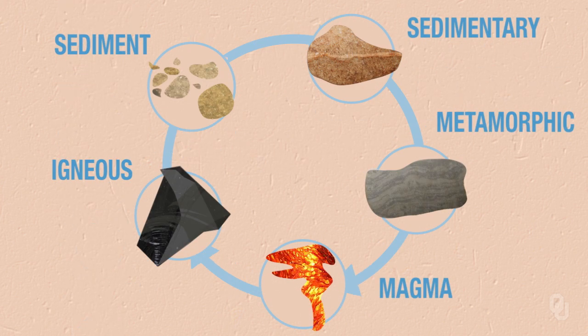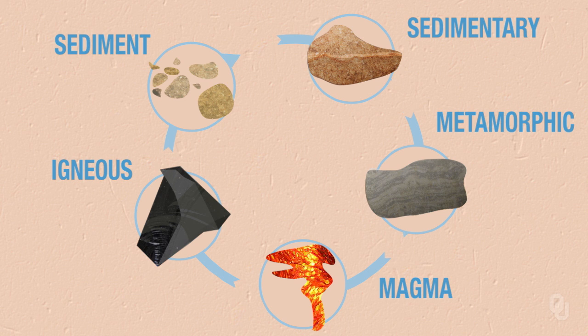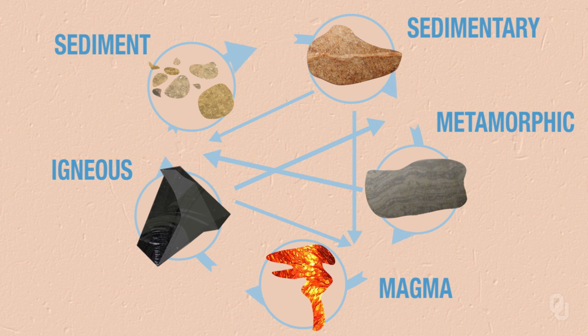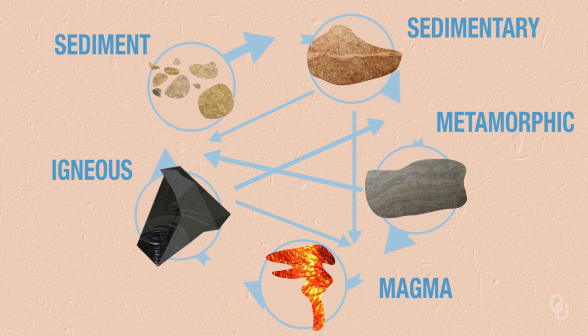So that's where the cycle comes in. And there's not only one path through the cycle — as you can see from the graphic, there are other kinds of pathways that rocks can follow. For example, an igneous rock can be buried, change into a metamorphic rock, and then melt.